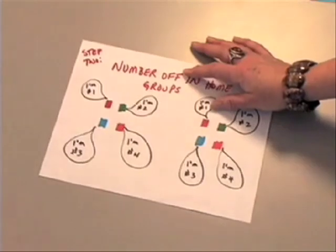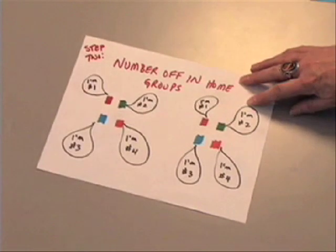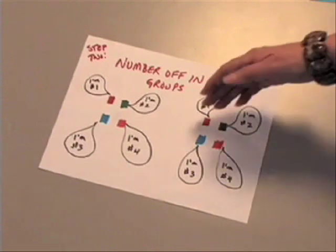Step 2. In each home group, have the students number off, in our case 1 through 4.